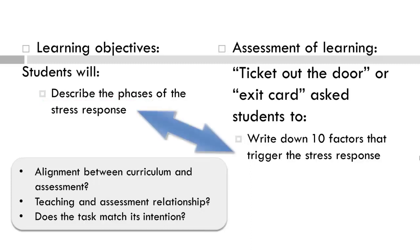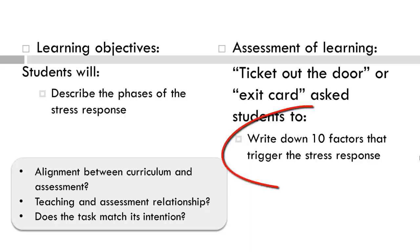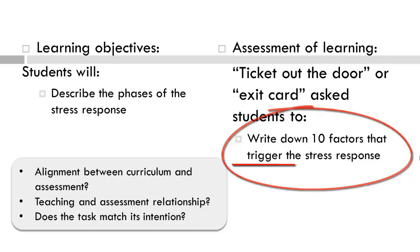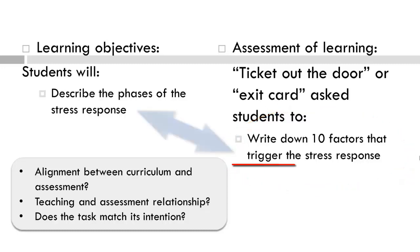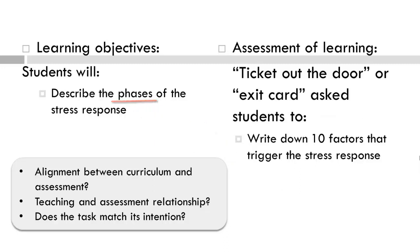Did the actual instructional experiences address the learning objectives? It is hard to tell based on the example with limited information. However, if we assume the instructor based the learning experiences on the objectives, then we assume the lesson dealt with the phases of the stress response. Now, if we take a look at the ticket out the door, the students are required to write down 10 factors that trigger the stress response. Does this match the learning objectives? Hopefully you see that there is a misalignment between the learning objectives and the assessment.